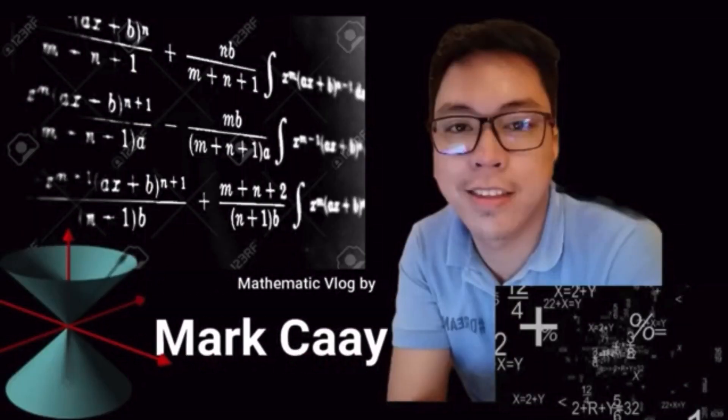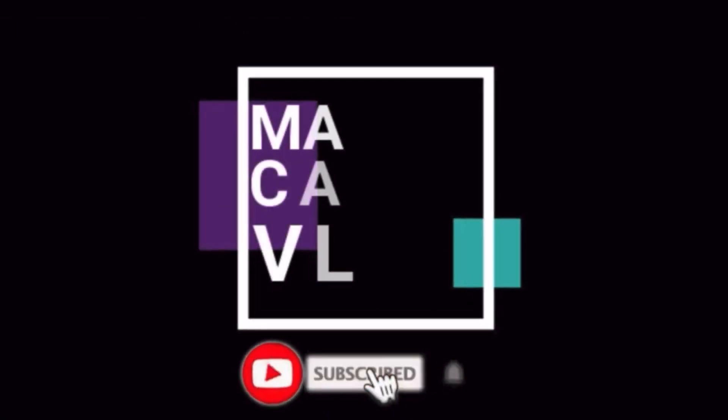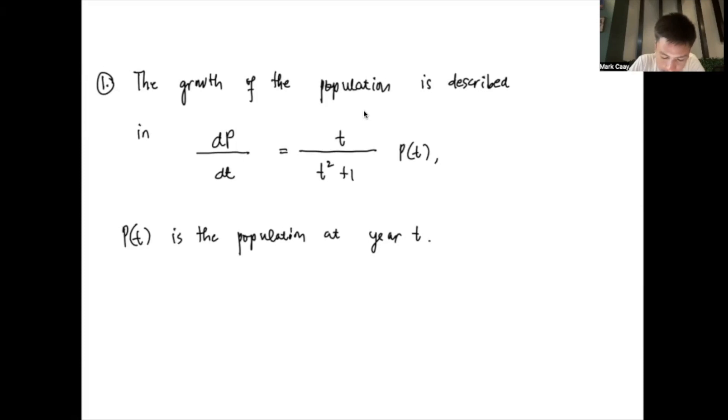Hi, welcome back to my channel. For today's video, we will be talking about the applications of separable equations in differential equations. Okay, so let's start with the first problem. The growth of the population is described in this differential equation: dp/dt equals t over t squared plus 1 times p(t). And your p(t) is the function of the population, a representation of the function of population at time t.